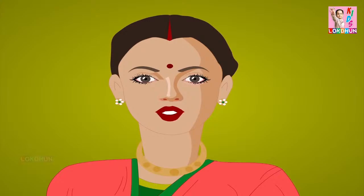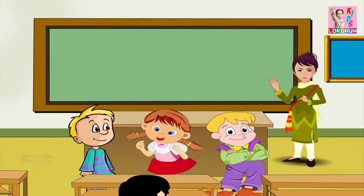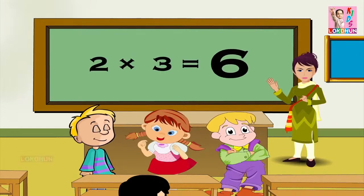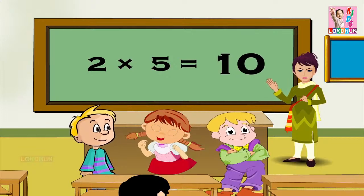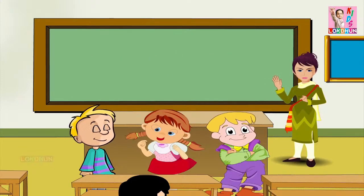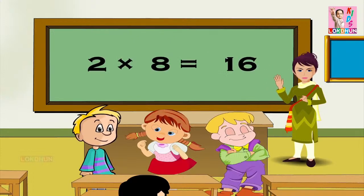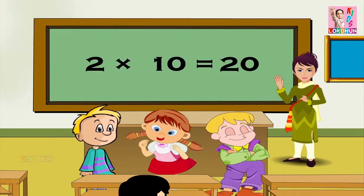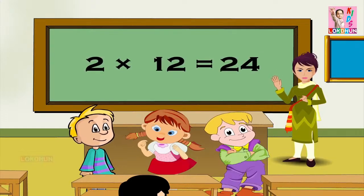And now children, you say the tables of 2 all by yourselves. 2 1s are 2, 2 2s are 4, 2 3s are 6, 2 4s are 8, 2 5s are 10, 2 6s are 12, 2 7s are 14, 2 8s are 16, 2 9s are 18, 2 10s are 20, 2 11s are 22, 2 12s are 24.